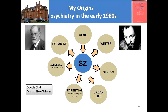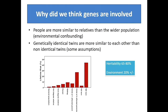What seemed fairly certain, because you're born with your genes, is that having schizophrenia didn't cause your genes. And that's why I got interested in studying genetics. So how do we know that schizophrenia and these other disorders are partly genetic?